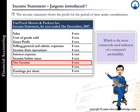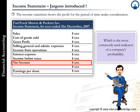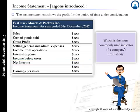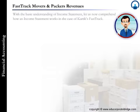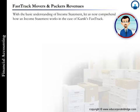Net income or net profit is the bottom line, which is the most commonly used indicator of a company's profitability. With a basic understanding of the income statement, let us now comprehend how an income statement works in the case of Karthik's Fast Track.